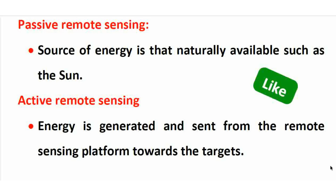Passive remote sensing relies on naturally available sources of energy. The sun is the only source of energy for passive remote sensing. For example, an ordinary camera that uses sunlight is passive remote sensing. If the camera generates its own energy — such as a flash — that is active remote sensing. In passive remote sensing, the source of energy depends on a natural source; an ordinary camera with a flash is an example of active remote sensing.